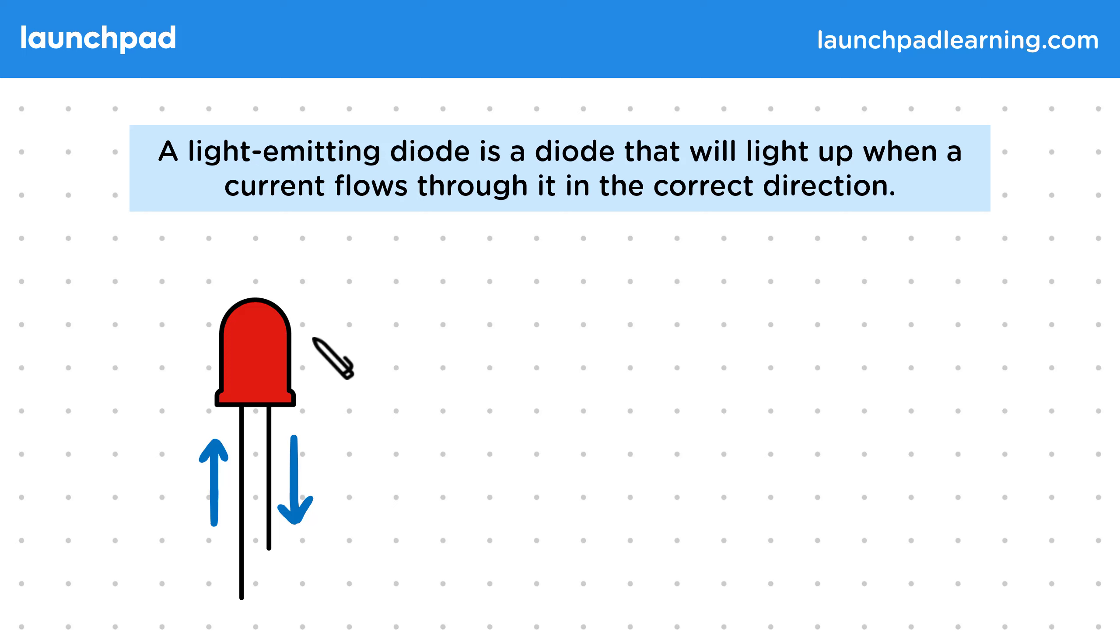Then if the current is flowing correctly, the diode lights up. This is useful for when we need a way of checking where currents are and aren't flowing correctly in large circuits.